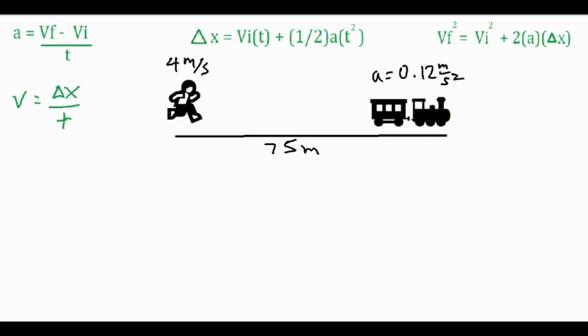The question is will the person catch the train, and if they do miss the train, how much are they going to miss it by, or what is the delta x or distance they're going to be separated by if they do not catch the train. In order to solve this problem you have to use some different equations.